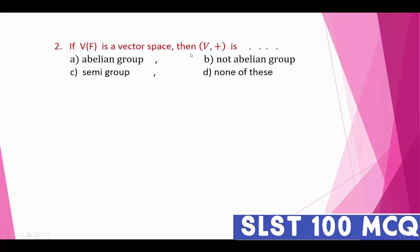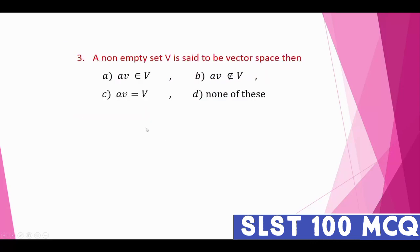Question number two: if V_F is a vector space, then V plus is an abelian group, not an abelian group, semi-group, or none of these. For a vector space, it has the property of an abelian group, but only V plus is categorized as an abelian group. That is the correct answer.